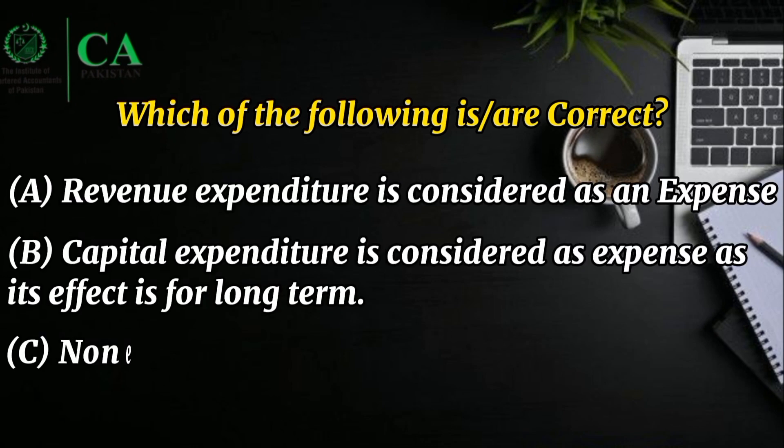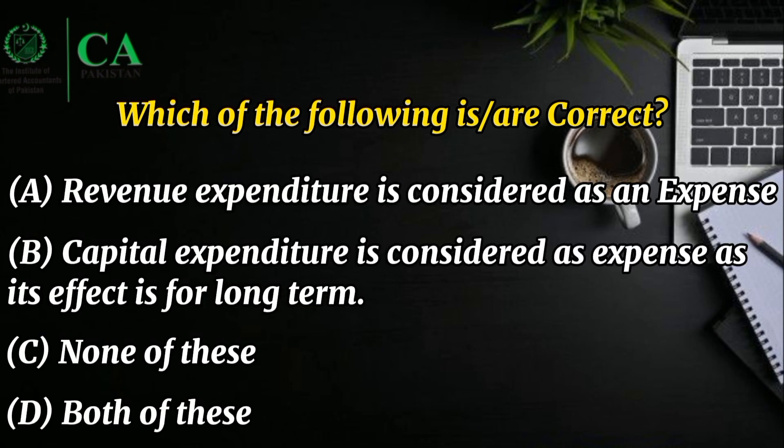Revenue expenditure is considered as an expense. Capital expenditure is considered as an expense as it's affected for a long time. So this option is right — revenue expenditure is the one treated as an expense.